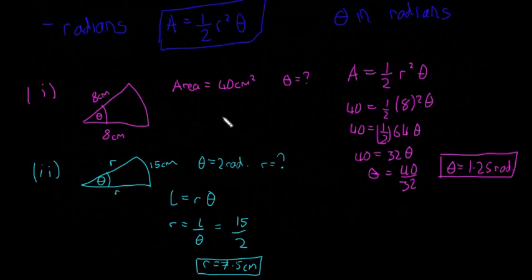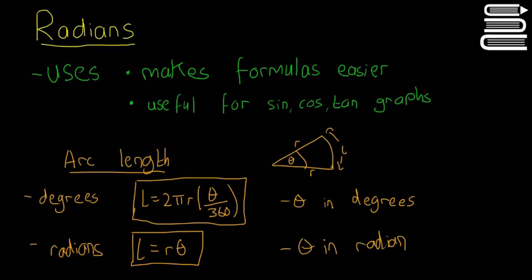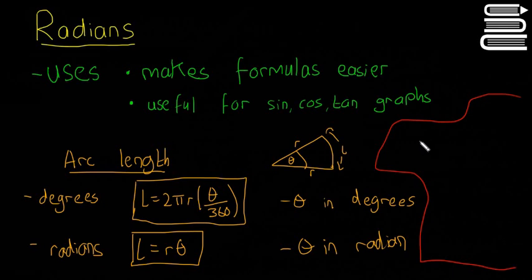Hopefully that video made sense. It was a quick one to show you some uses of radians and where you can use them. I'll give you two quick questions to try: 10 radians equals how many degrees? And 181 degrees equals how many radians? They're just quick questions using the method from the last video. Give them a go and let us know in the comments. In the next video, we'll look at graphs of sine, cos, and tan. See you then.